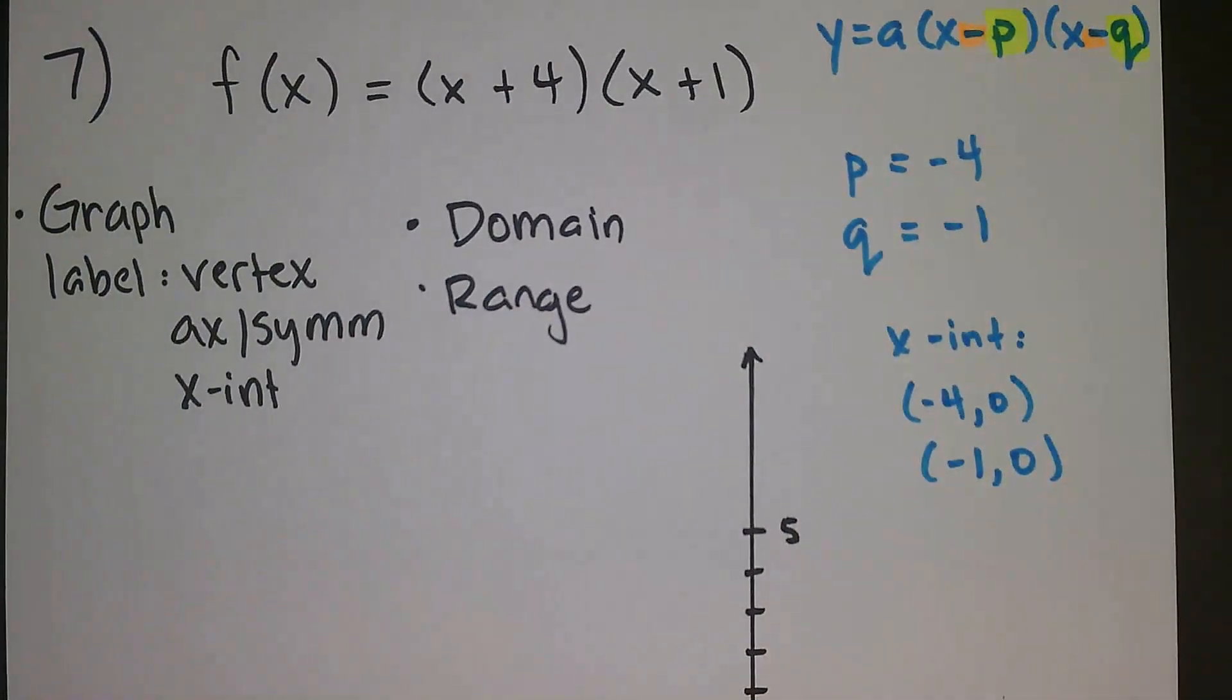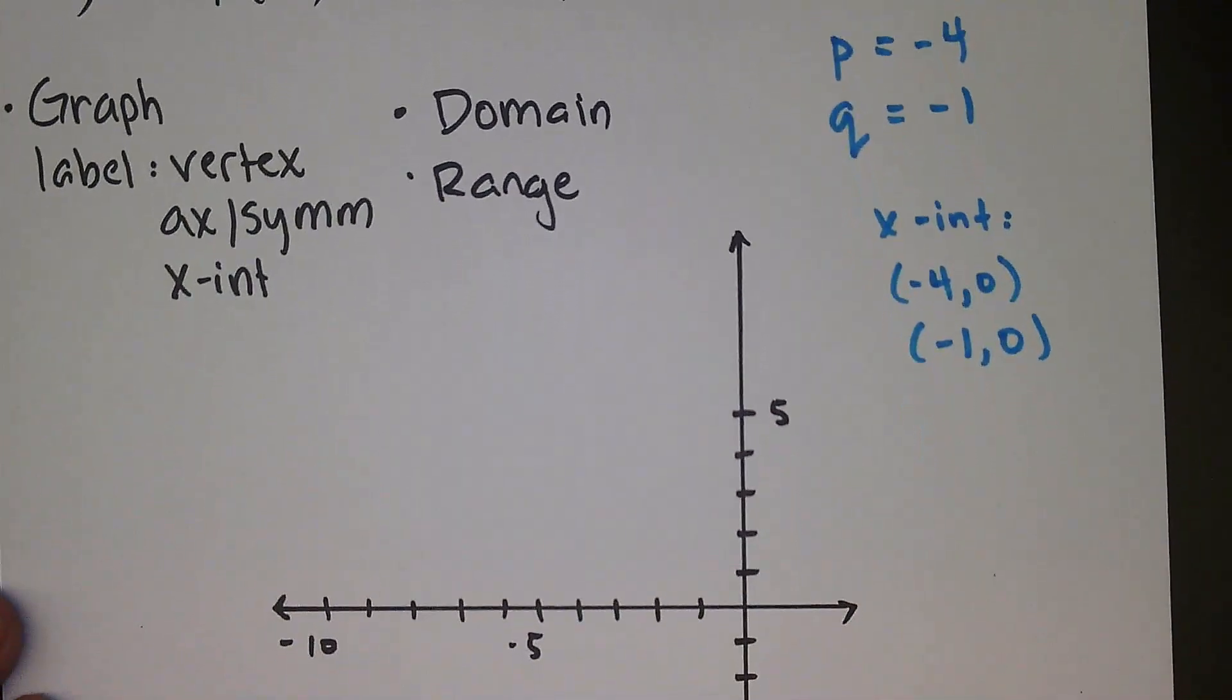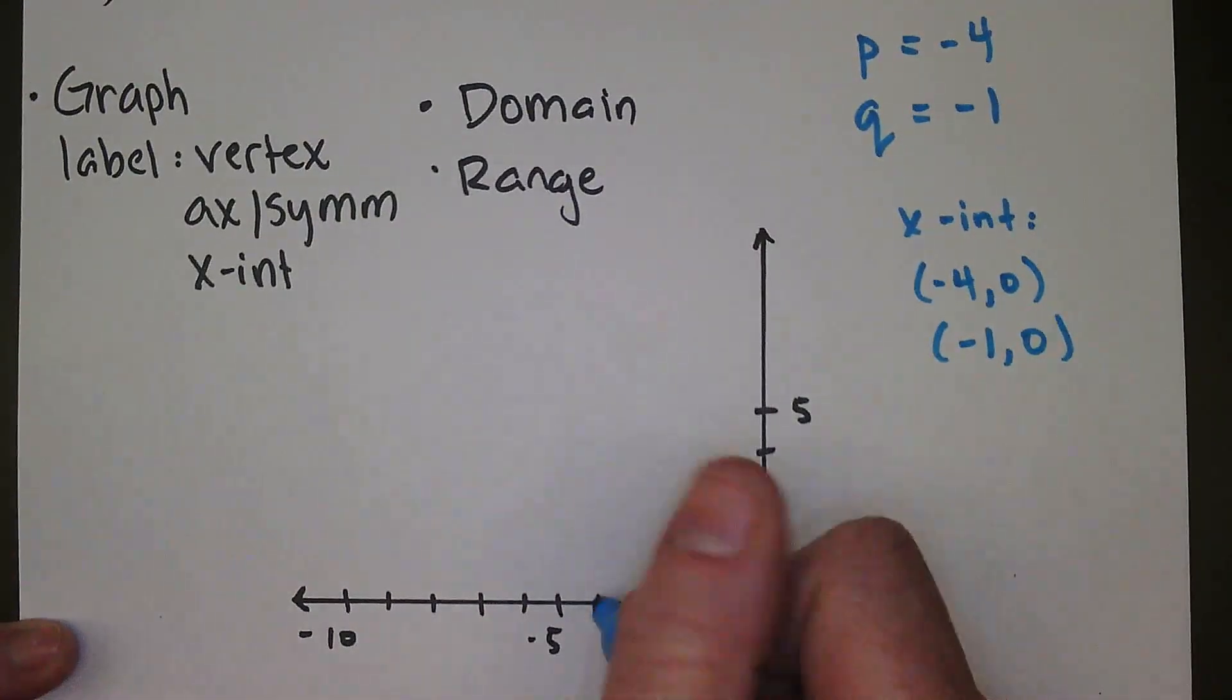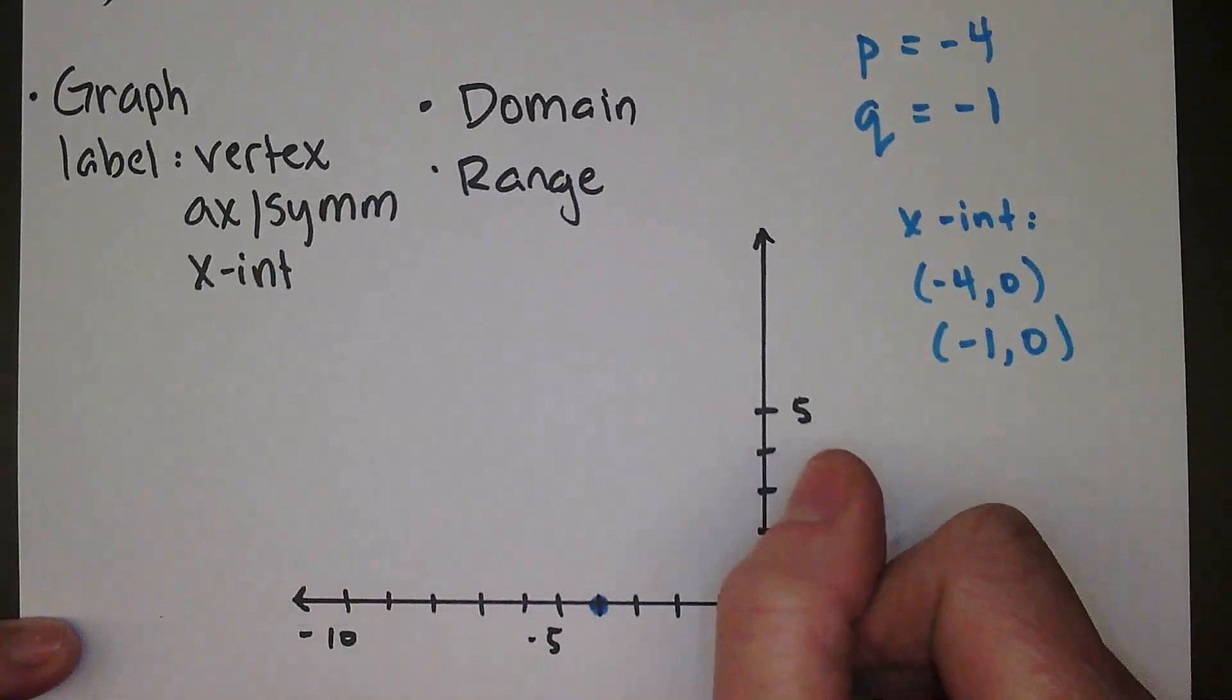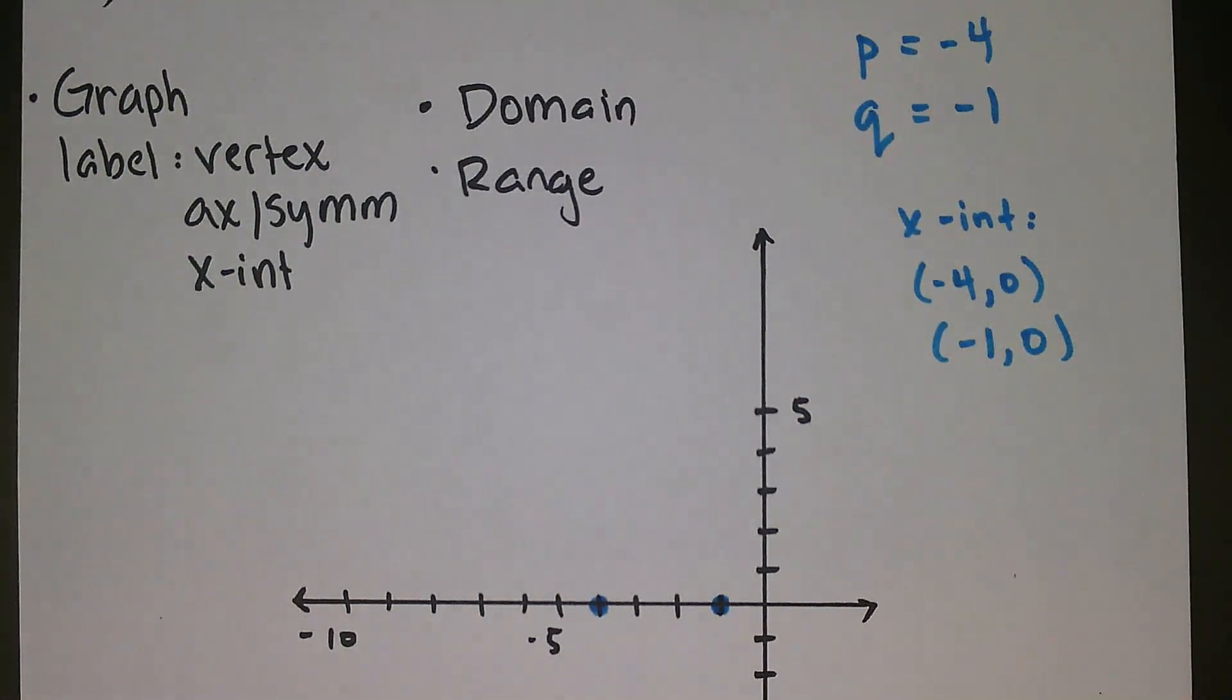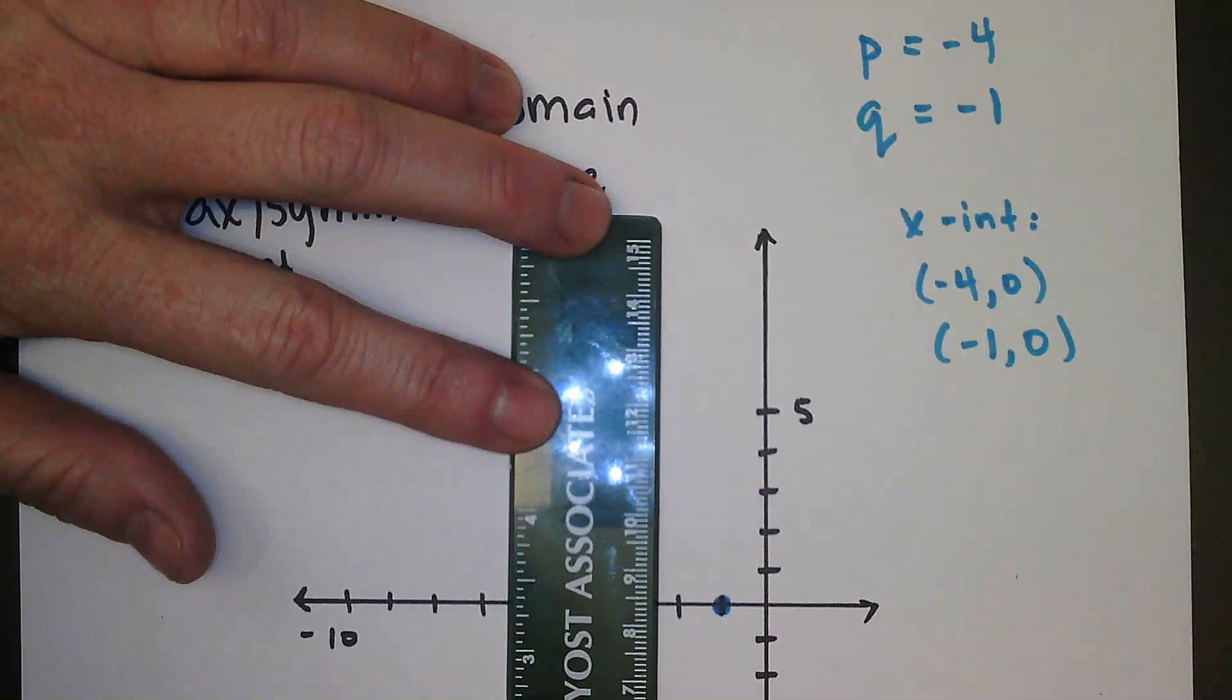Now to find the axis of symmetry, the axis of symmetry splits that. So let me go ahead and move up so we can actually see maybe negative 4 right here and negative 1 right here. Now the axis of symmetry is going to go right in between them, and it's going to go right down the middle.